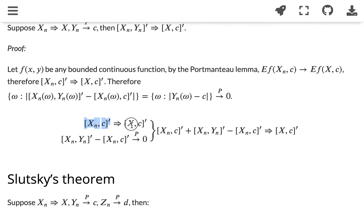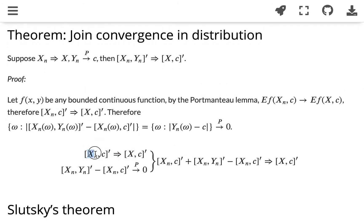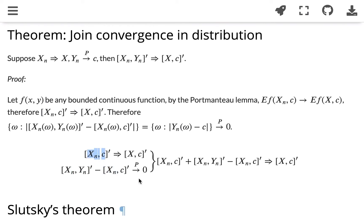Looking at these two conclusions together, this basically reminds us of the result we proved earlier: if we have a random vector converging in distribution and another converging in probability, then adding these two together — (Xn, C) plus the difference term — the (Xn, C) terms cancel and what's left is (Xn, Yn). This converges in distribution, which is exactly what we wanted to prove. We have shown that (Xn, Yn) converges in distribution to (X, C).